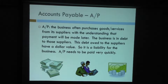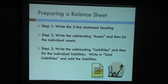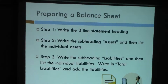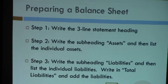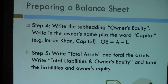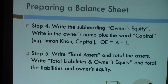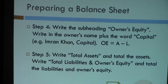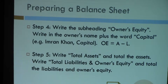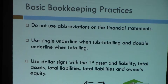To prepare a balance sheet, you first write the three-line statement heading, then subheadings such as assets, liabilities, and owner's equity, and then total them up. Owner's equity is the difference between assets and liabilities, and it also represents the value that the owner has in the business. It is written as the owner's name followed by 'capital' — for example, 'Owner Name, Capital' — as shown on the balance sheet.